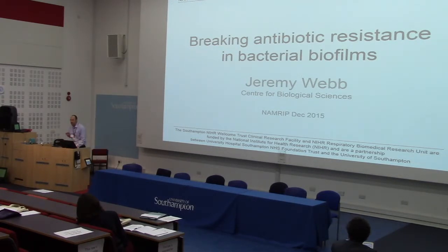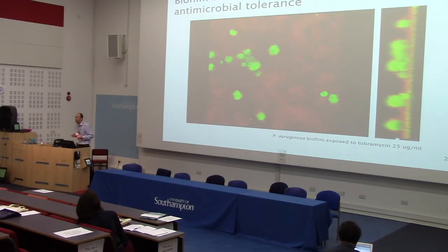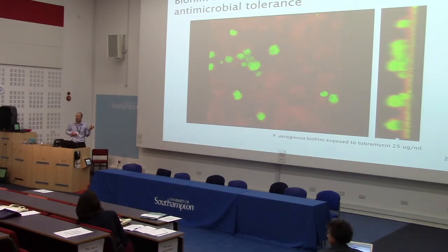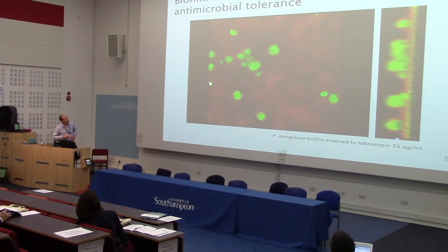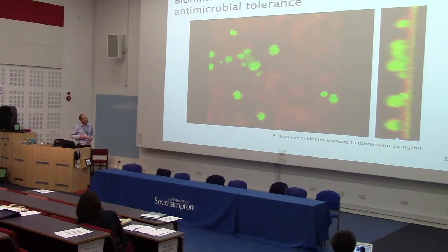We're addressing a critical unmet need, which is that we don't have effective therapeutics that are active against microbial biofilms. To illustrate the problem, this is a biofilm with Pseudomonas aeruginosa that has been treated with the antibiotic tobramycin at quite a high concentration. You can see that while the antibiotic kills the majority of the surface of the biofilm, shown in red here as dead cells, there are these structured clusters of bacteria that are completely protected against antibiotic killing.